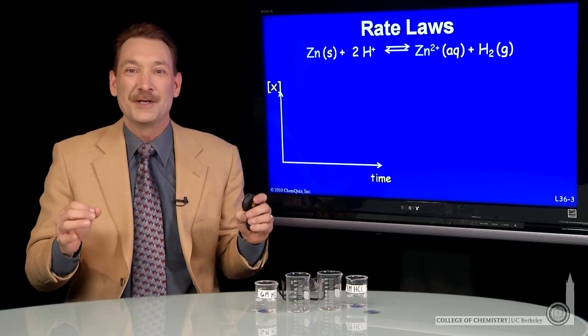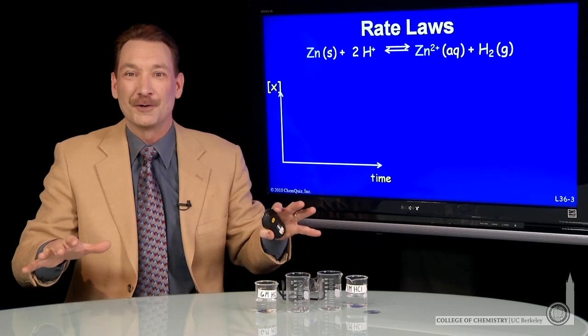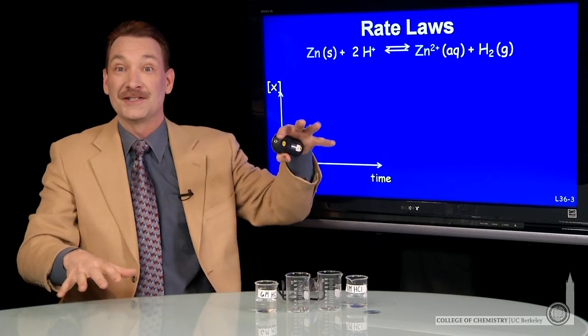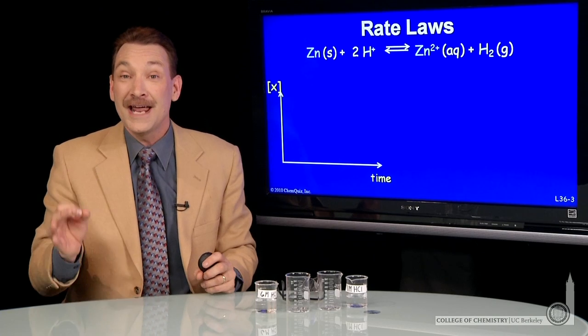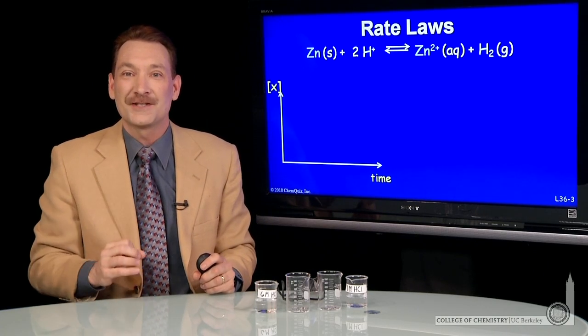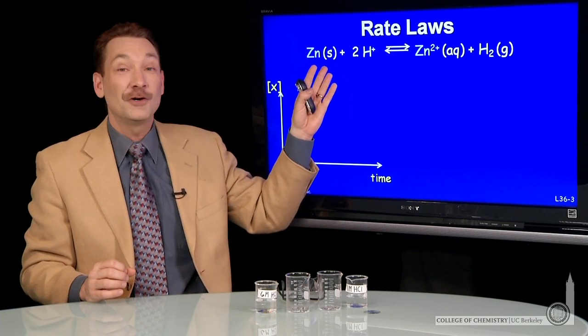When we talk about chemical reactions, we talk about it in two different fields: the thermodynamics of the chemical reaction, how energy changes and how that energy is dispersed throughout the system, or the kinetics of the chemical reaction, the rate, how fast the reactions go. That's what I'd like to look at now: chemical kinetics.